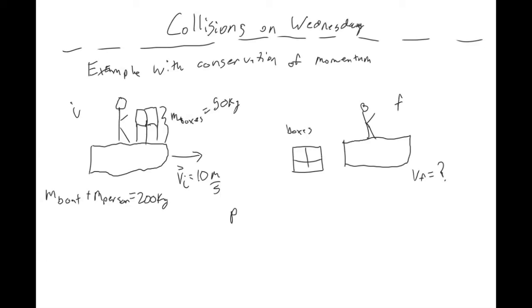So we set this up with our conservation of momentum. We have the initial mass times the initial velocity equals the final mass times the final velocity. The initial mass would be the boat, the person, and the boxes. And that would be 250. And then the final mass would just be the boat and the person. So that would be 200.